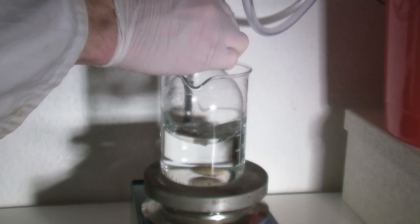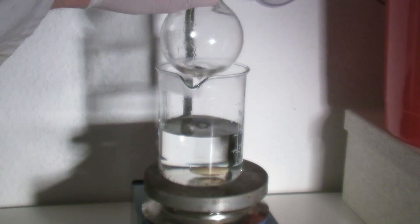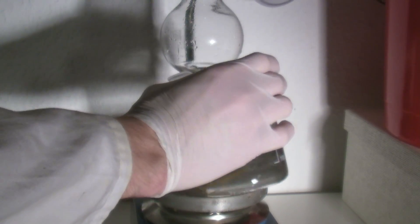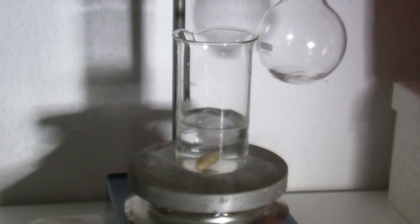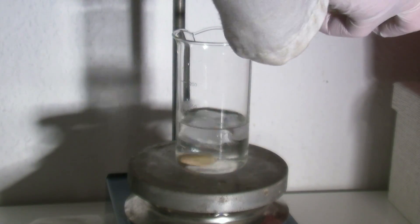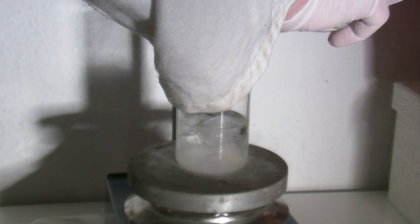At the end, the flask can be removed from the water bath and is left to sit until it feels warm to the touch. After that, a beaker with 100 milliliters of water and ice is prepared and the content of the flask is added while stirring vigorously.